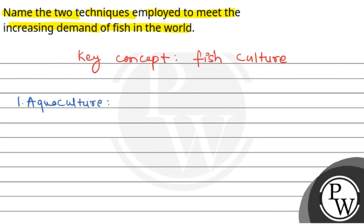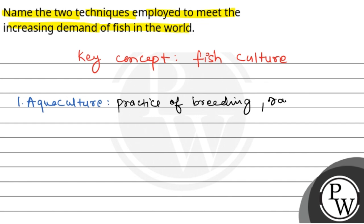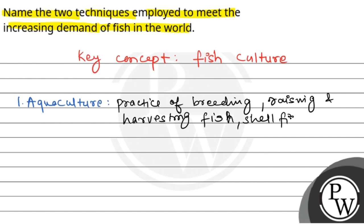What do we do in aquaculture? In aquaculture, we have a practice where we have breeding, raising, and harvesting of fish and other aquatic organisms in environments such as ponds, tanks, and ocean enclosures. This includes fish, shellfish, and other aquatic organisms.